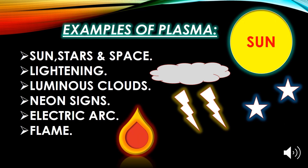About 99% of the universe is in the plasma state. Plasma is found in the atmosphere of the sun, stars, and the upper region of the atmosphere. During lightning, plasma is also produced. Luminous clouds also contain plasma, and plasma is used in electrical arcs used by welders. Flames also contain plasma.